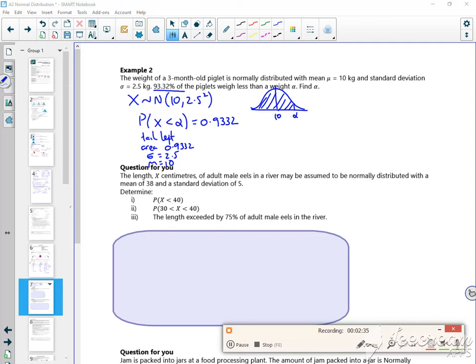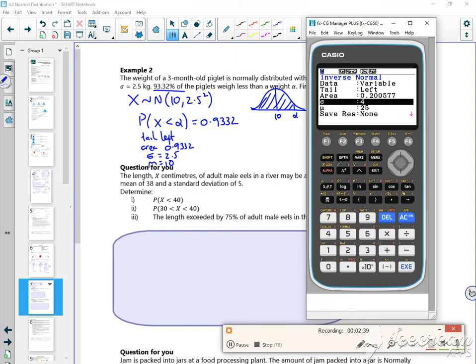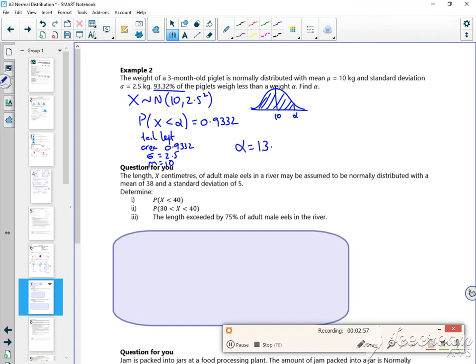So it's going: left tail, 0.9332, sigma 2.5, mu 10. So it gives me a weight of 13.75 kilos. There, there you go.